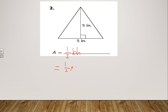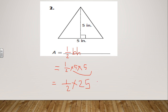Half times five times five. To make it easy, let's do five times five first. Five times five equals 25, so that will be half times 25, which equals 12.5.